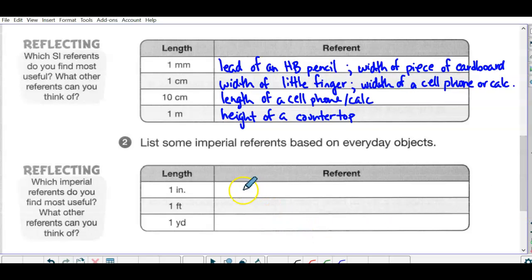List some imperial. So one inch. So that is now again you could say it's the width of your thumb. And that's how it was invented. But for me my thumb isn't that wide. But from the knuckle. So length from the from the knuckle of my thumb to the tip is about an inch. Okay.